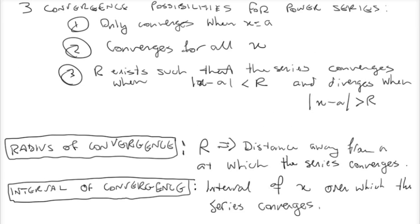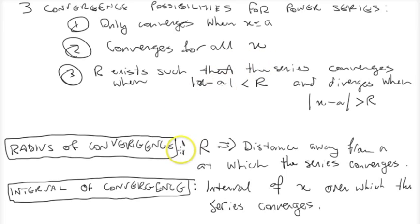Here we've got our three possibilities for the convergence of a power series. Either the power series will converge when x is a, or it'll converge for all values of x, or there will be some number r for which the series converges when the absolute value of x minus a is less than r, and it'll diverge when that's greater than r. If the power series converges for all values of x, the radius of convergence is going to be infinity, and the interval of convergence is going to be the open interval from negative infinity to infinity.